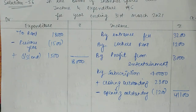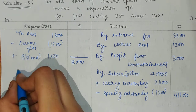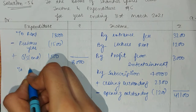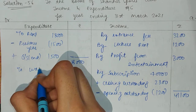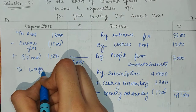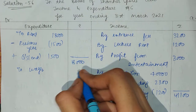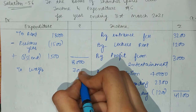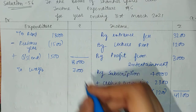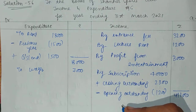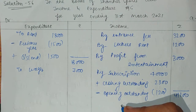After that, wages are given — that is $2,000, and the total comes to $7,000. The billiard table will not be included in the income and expenditure account — it is a capital item. Similarly, furniture will also not be included as it is a fixed asset.